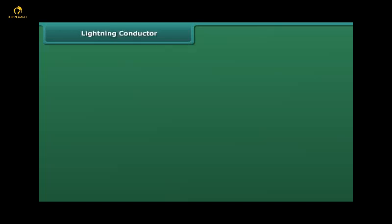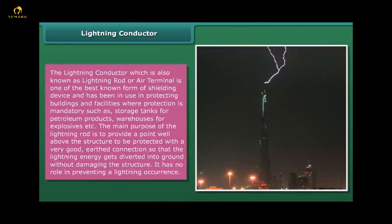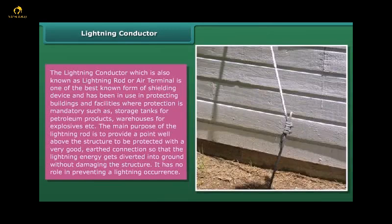Lightning conductor: The lightning conductor, which is also known as lightning rod or air terminal, is one of the best known forms of shielding device and has been in use in protecting buildings and facilities where protection is mandatory, such as storage tanks for petroleum products, warehouses for explosives, etc. The main purpose of the lightning rod is to provide a point well above the structure to be protected with a very good earth connection so that the lightning energy gets diverted into ground without damaging the structure. It has no role in preventing a lightning occurrence.